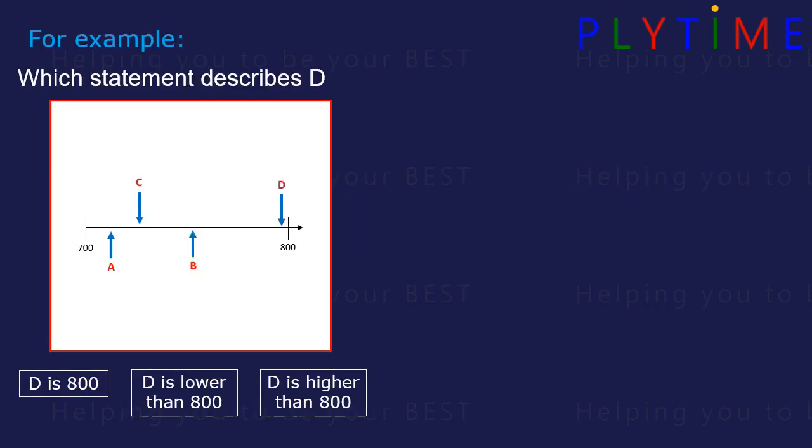Which statement describes D? D is 800, it's lower than 800, or higher than 800? The number line goes up in 100s from 700 to 800. Let's find D. It's here.